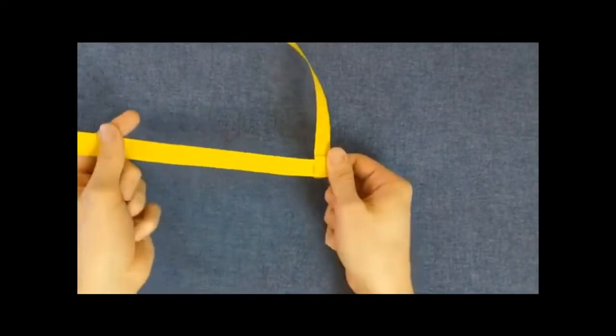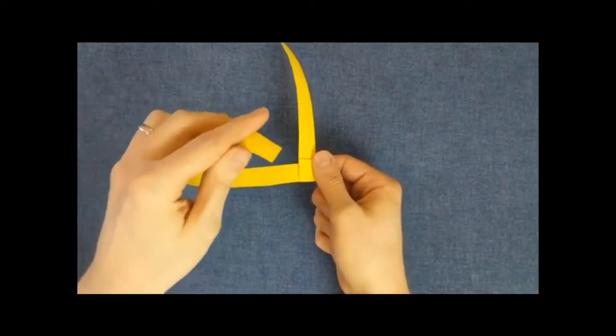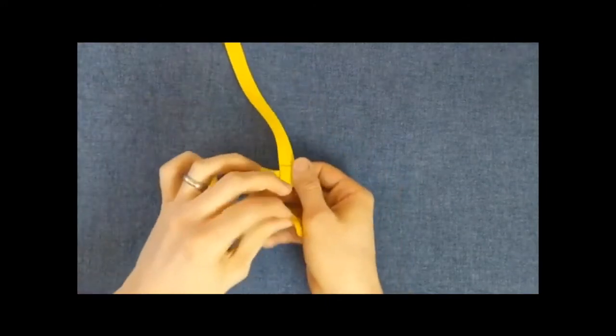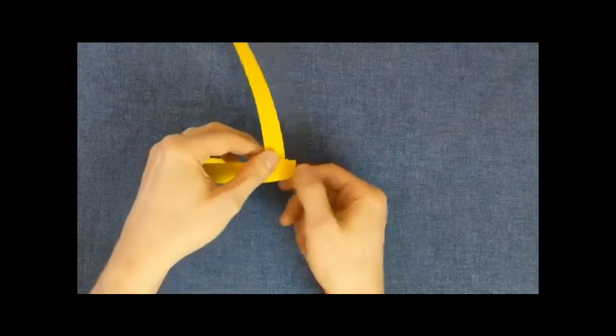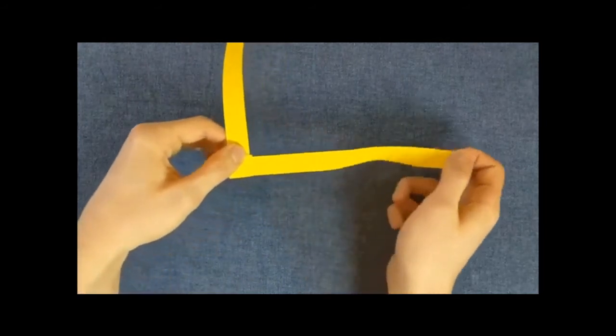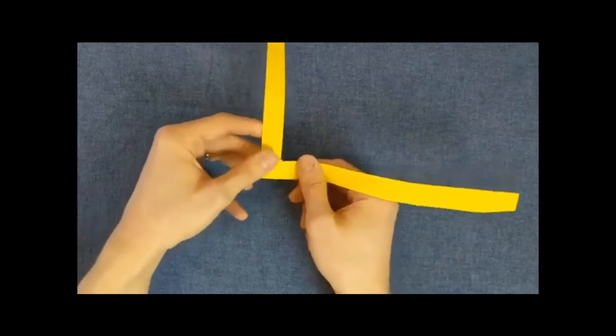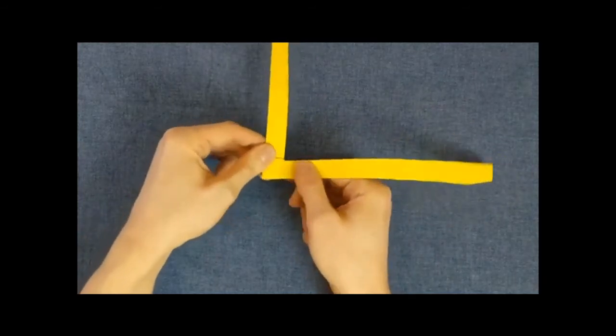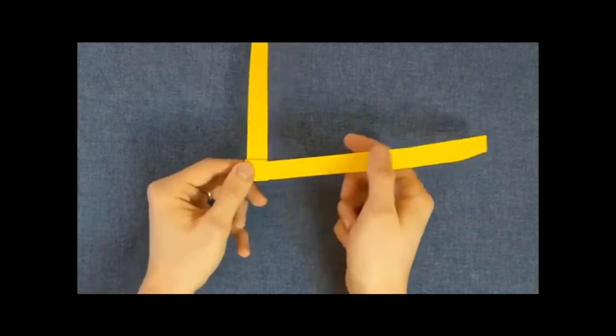And we are going to take this strip of paper on the left and we are going to thread it through that pocket. And I want you to pull it tight. And what you've done there is you've made a knot which will form the central piece of your palm cross. And you'll be pleased to know that's the hardest instructions over.